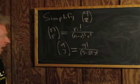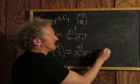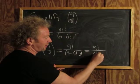We subtract 9 minus 3 is 6. So this is 9 factorial over 6 factorial times 3 factorial.